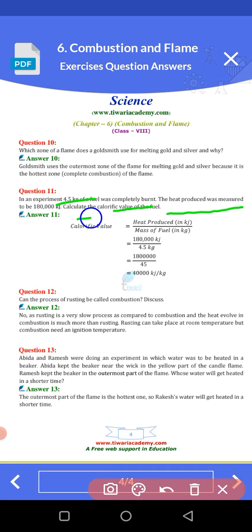To calculate the calorific value of the fuel, calorific value equals heat production divided by the mass of the fuel. Heat production was 100,000 kJ and mass of the fuel was 4 kg.